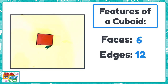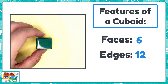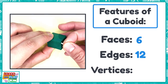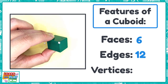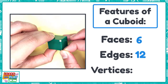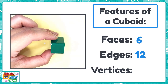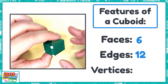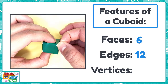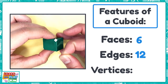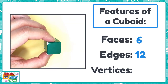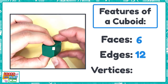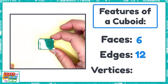Let's count the next feature of a cuboid — the vertices. Vertices are the points where the edges meet. One, two, three, four, five, six, seven, and eight. A cuboid has eight vertices.